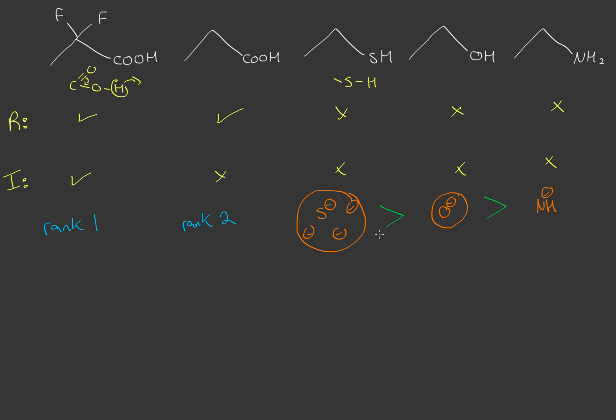And therefore we have our rankings now. This is number three because it's polarizable, which is what they call it when it's larger and the negative charge is more spread out. We have rank four over here because oxygen is more electronegative than nitrogen and therefore it can handle a negative charge better.